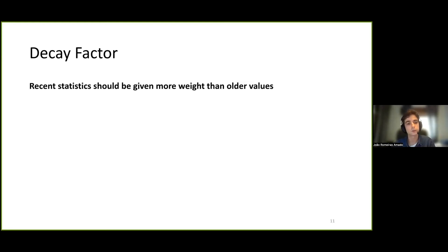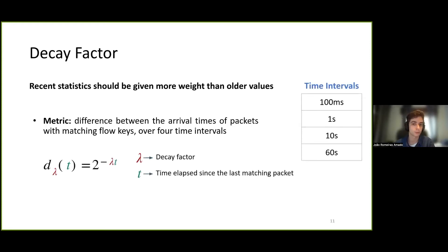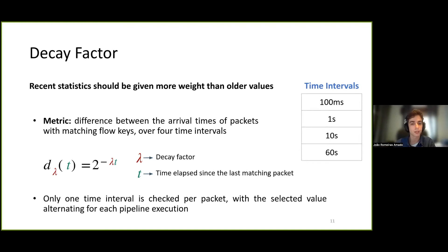An additional consideration is that, given the volatile nature of network traffic, it is beneficial to give recent statistics more weight than older values in the overall set. We achieve this through a decay factor, which is applied on the various counter values that we track before they are updated. The metric used to decide when to apply the decay factor is the difference between the arrival times of packets with matching flowkeys across four time intervals: 100 milliseconds, 1 second, 10 seconds, and 60 seconds. We check only one time interval per packet due to resource constraints, and the selected interval value alternates for each pipeline execution.